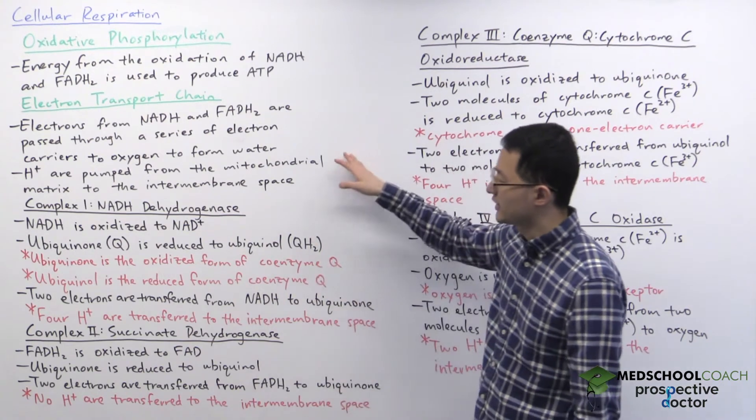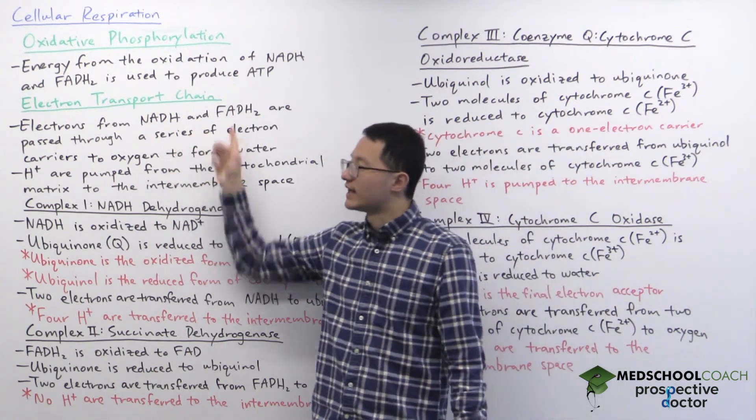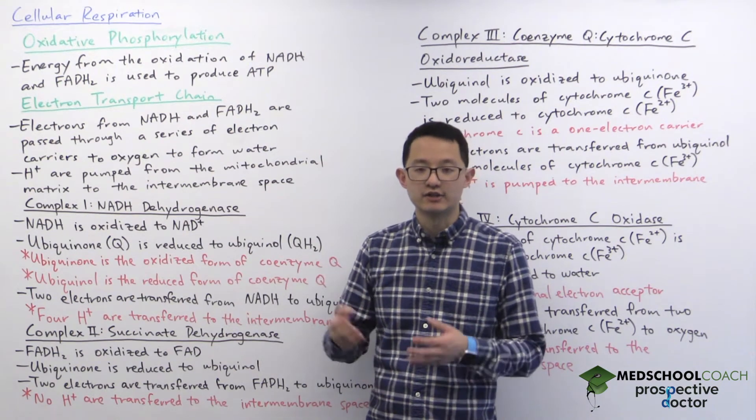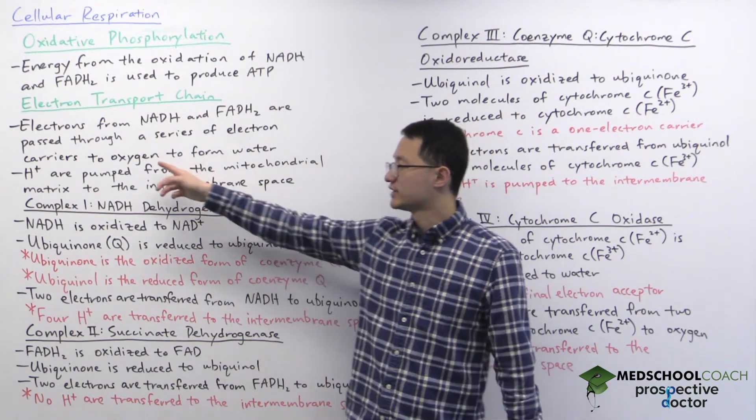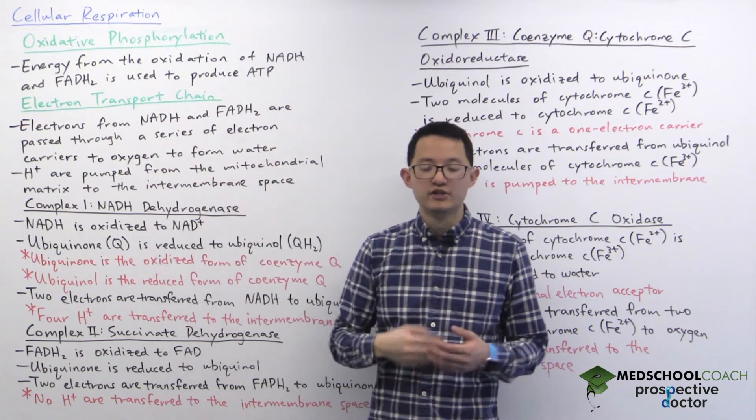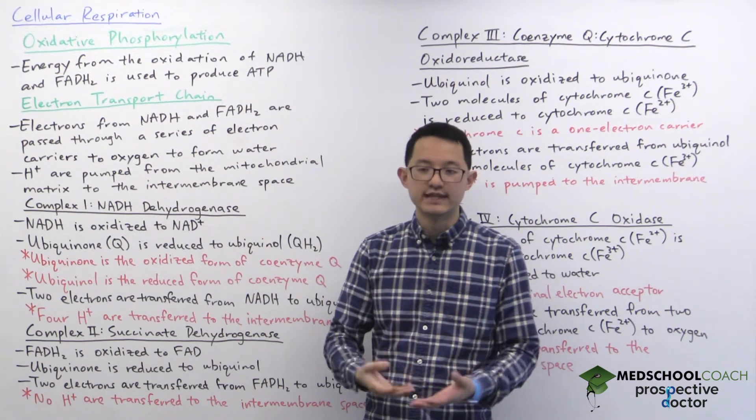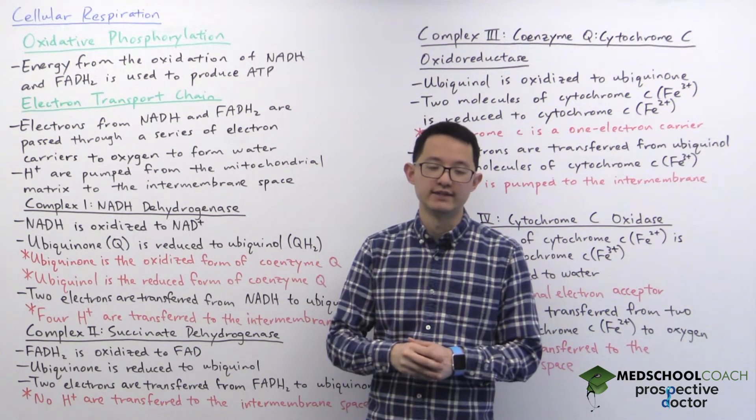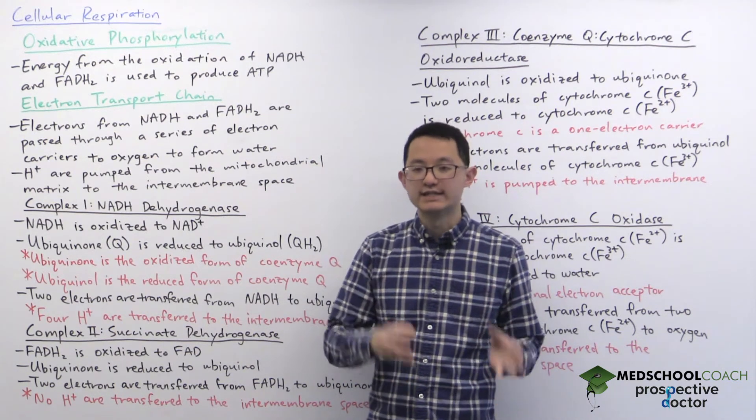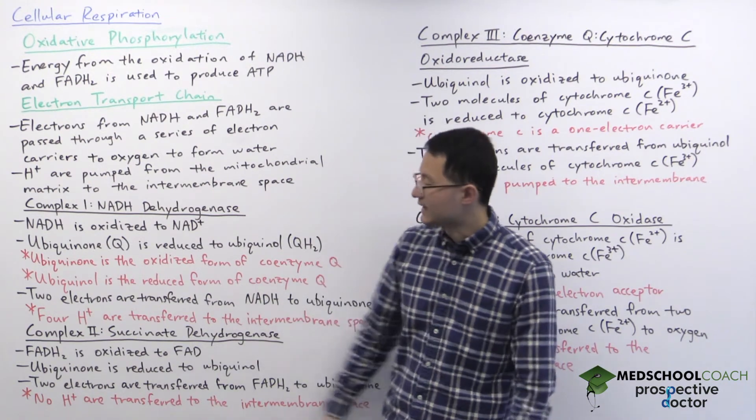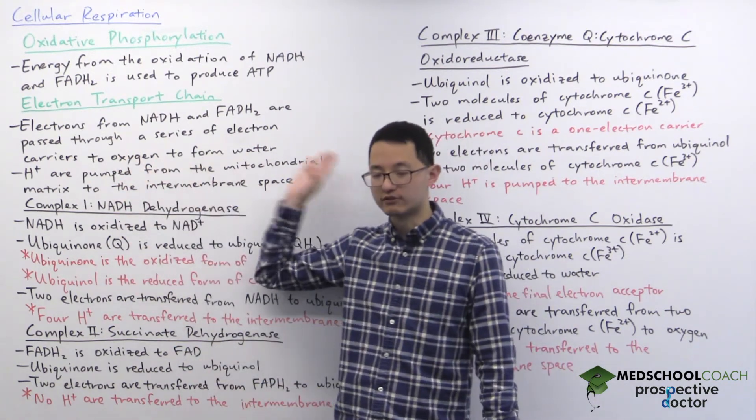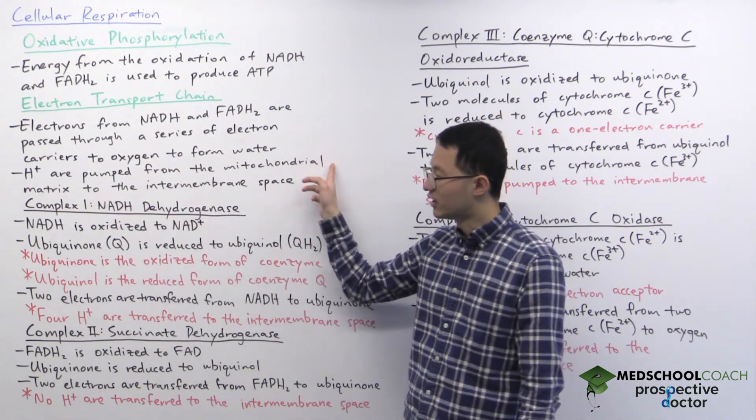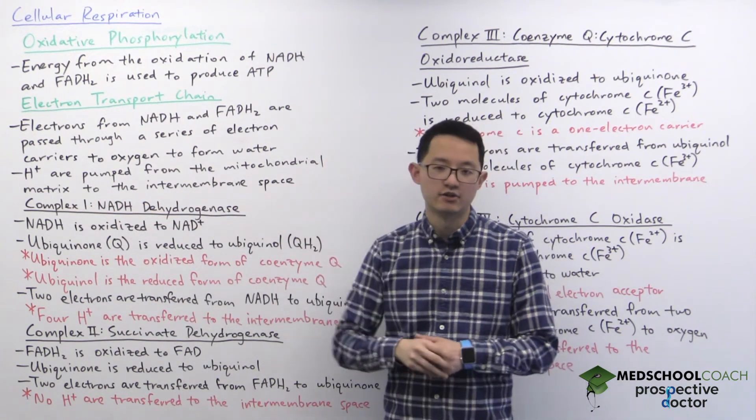So in the electron transfer chain, the electrons from NADH and FADH2 are passed through a series of electron carriers and eventually to oxygen to form water. So essentially we're carrying out a number of oxidation reactions to release energy from NADH and FADH2. This energy is captured in the form of a proton gradient, as the electrons are traveling through these electron carriers, protons are being pumped from the mitochondrial matrix to the intermembrane space.